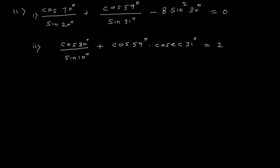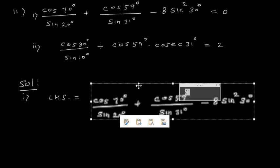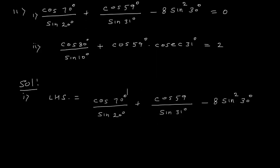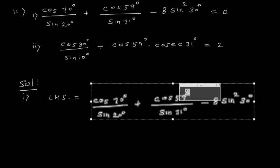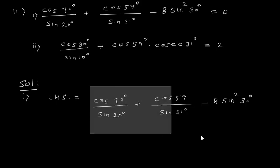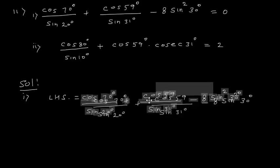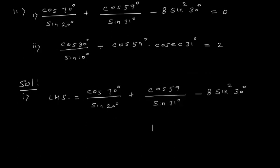We will start with the left hand side. So LHS equals: cos70° / sin20° + cos59° / sin31° − 8sin²30°.